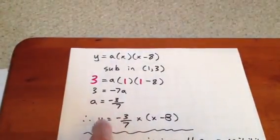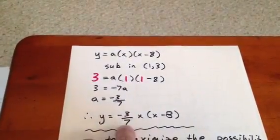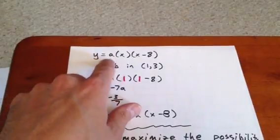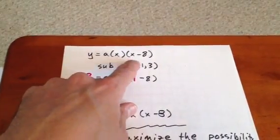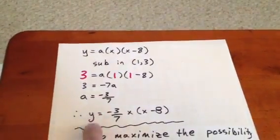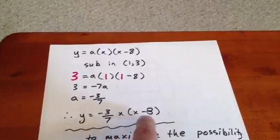So what we can then do is plug in negative 3 sevenths for a up here, and we get y equals negative 3 sevenths times x times x minus 8.